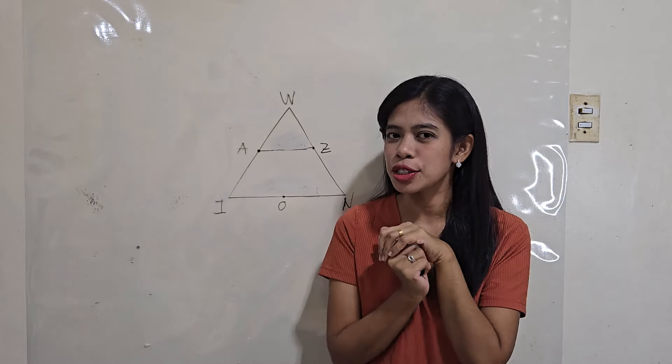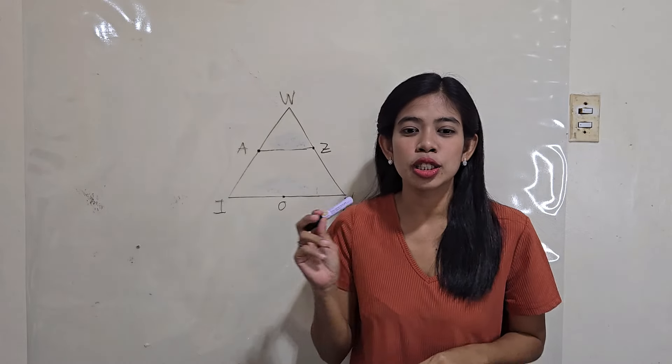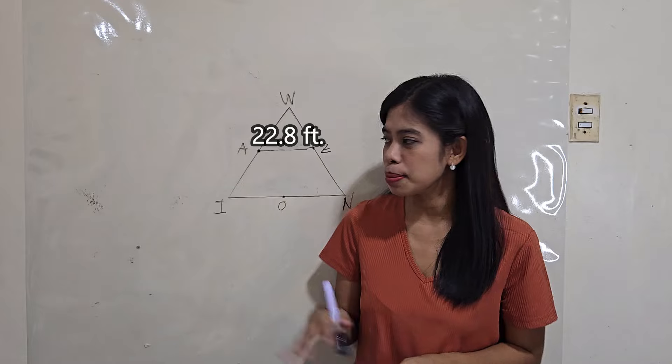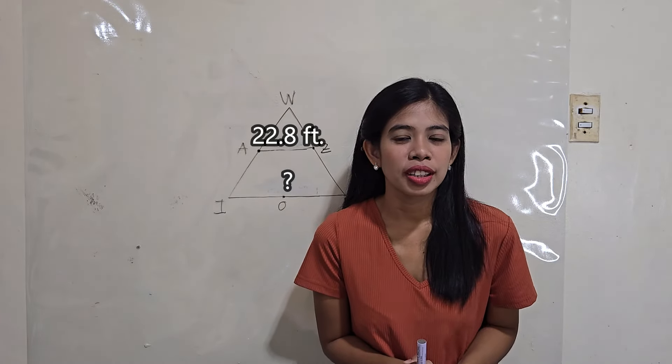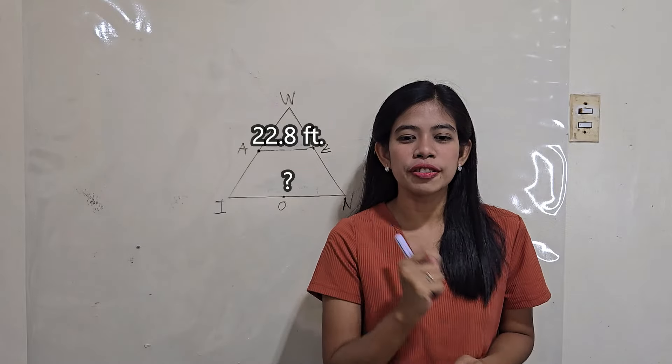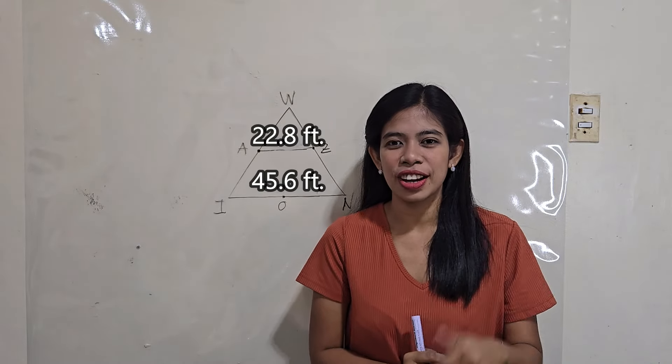How about if the measure of the midline is 22.8 feet? What's the measure of the third side? Decimals, right? So, that's 45.6 feet. Very good.